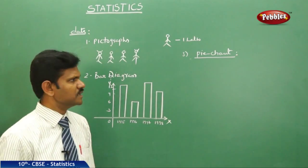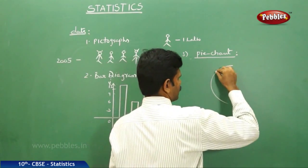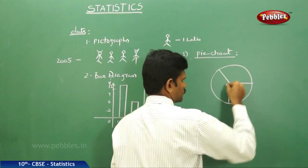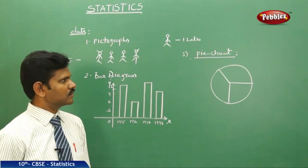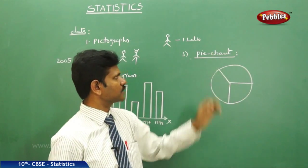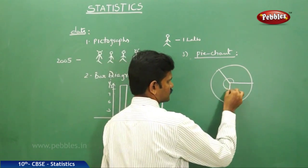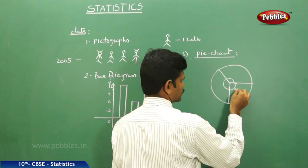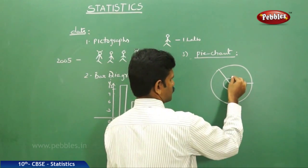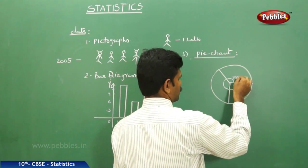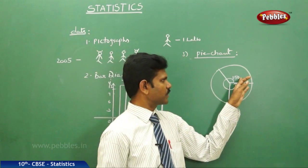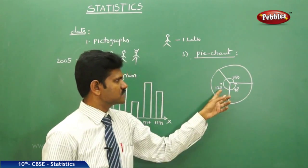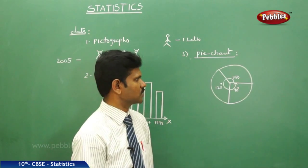The third method is a pie chart — representing data in terms of sectors of a circle. We know that the central angle is 360 degrees. For example, sectors can be 90 degrees, 150 degrees, and 120 degrees, and the sum of all angles at the centre equals 360 degrees.